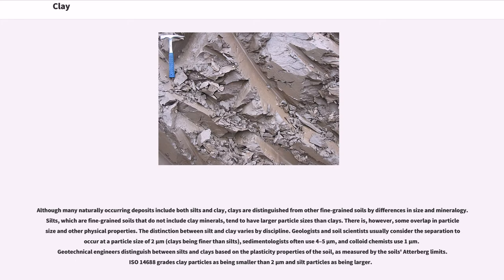Although many naturally occurring deposits include both silts and clay, clays are distinguished from other fine-grained soils by differences in size and mineralogy. Silts, which are fine-grained soils that do not include clay minerals, tend to have larger particle sizes than clays. There is, however, some overlap in particle size and other physical properties.